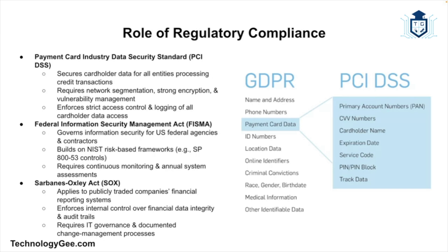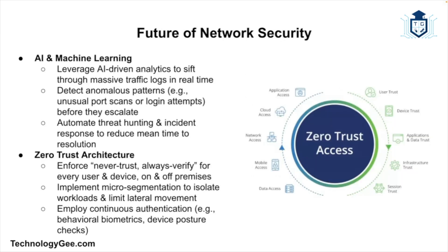You have FISMA — the Federal Information Security Management Act — a U.S. federal law requiring federal agencies and contractors to implement information security programs to protect government information and systems. Then we have SOX, which mandates that publicly traded companies implement internal controls and security measures to protect financial data and ensure accurate financial reporting. Adhering to these regulations helps organizations protect sensitive data, avoid legal penalties, and build trust with customers and partners.